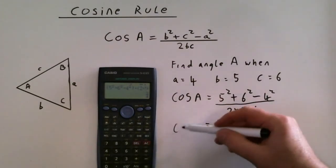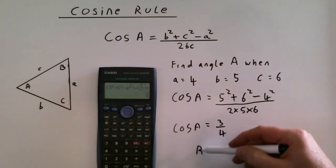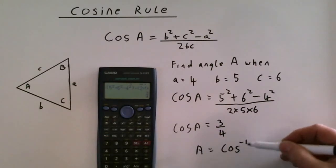That's the cos of A. So A will be cos to the minus 1 of 3 quarters.